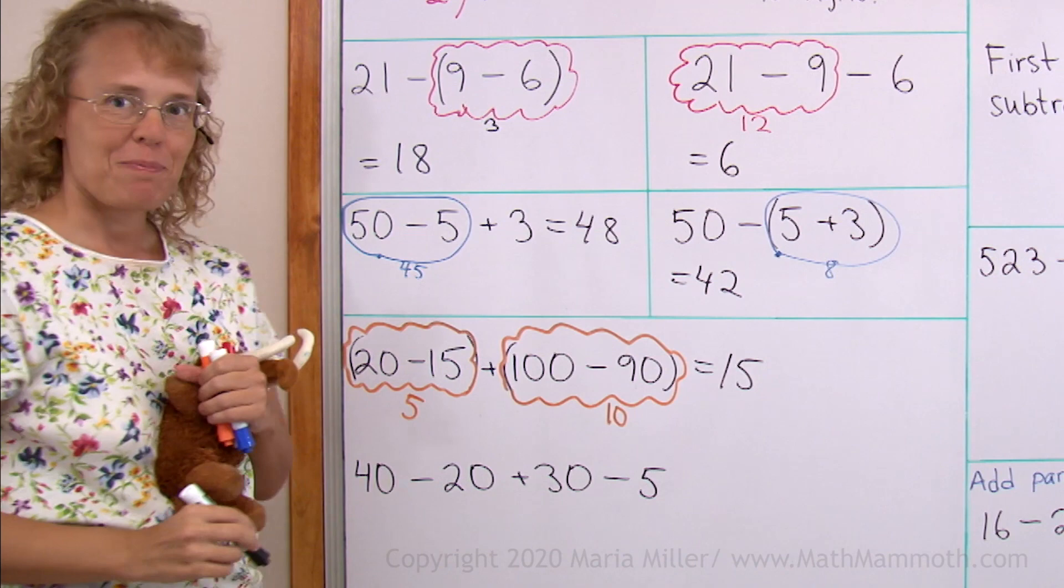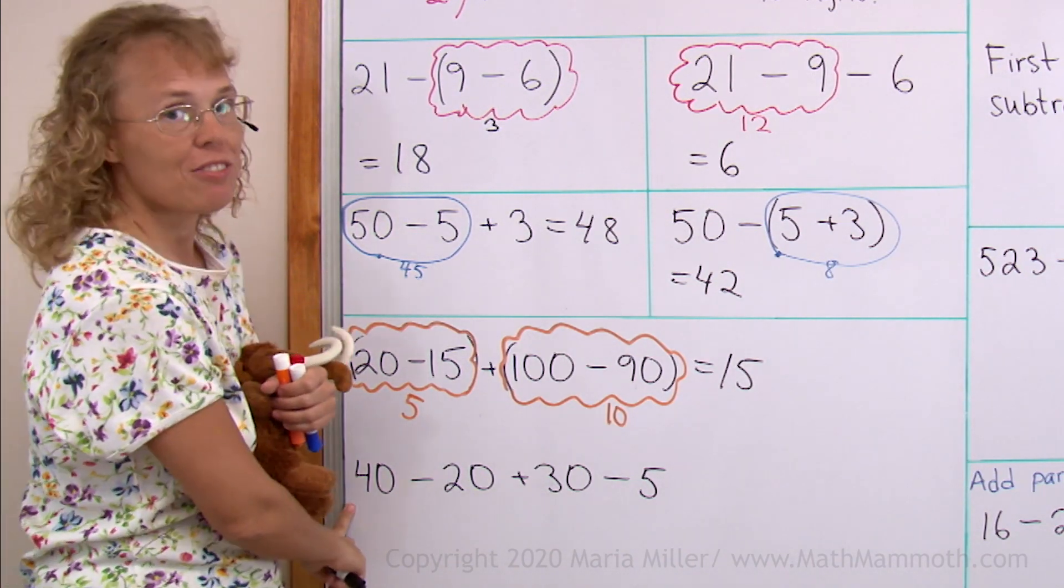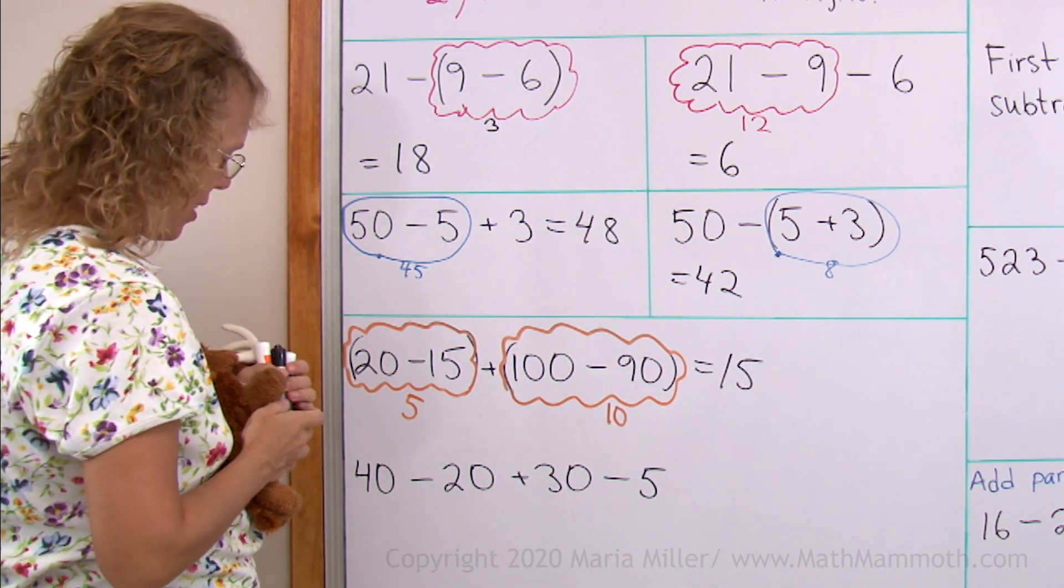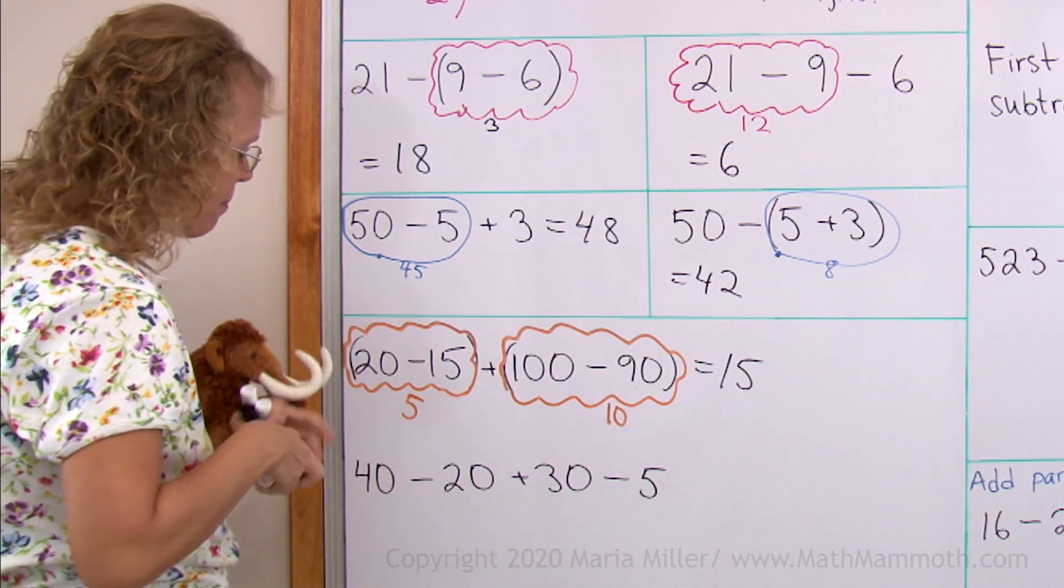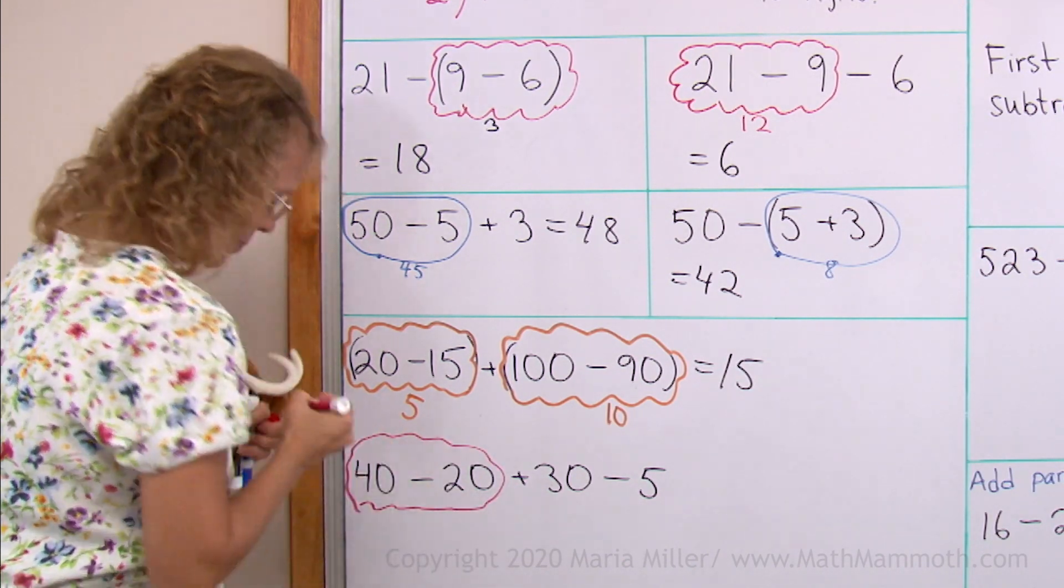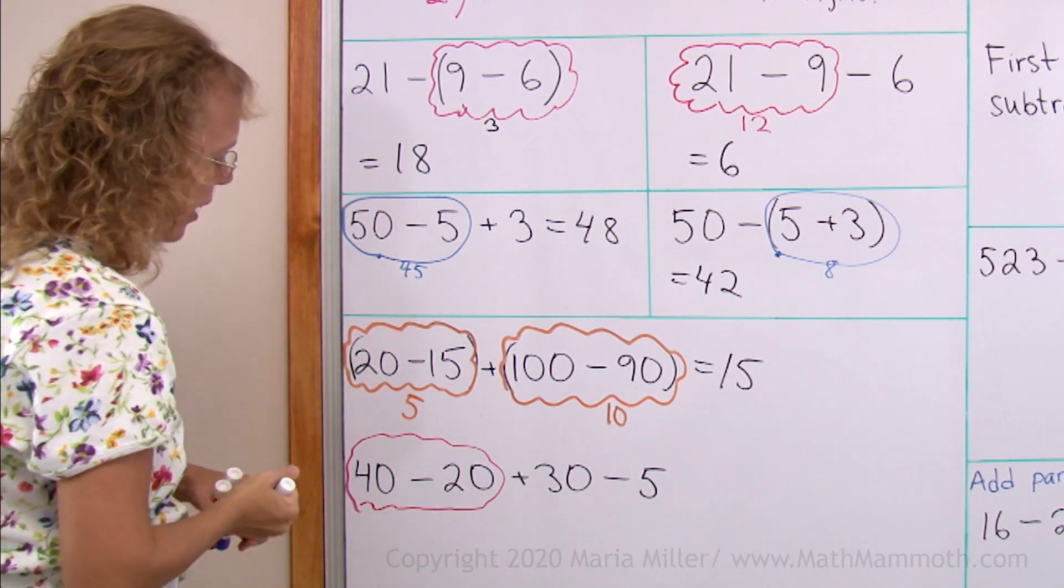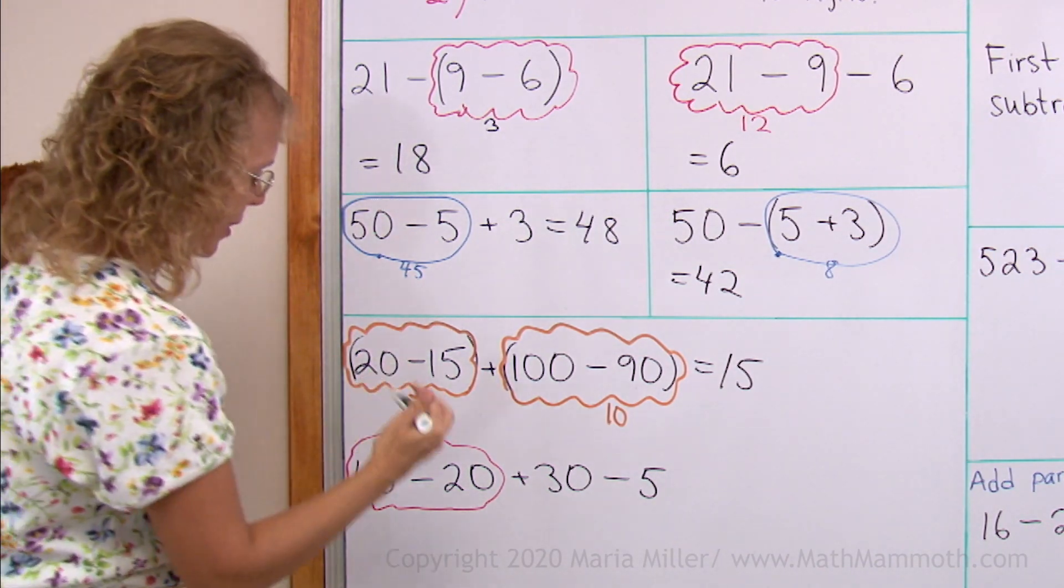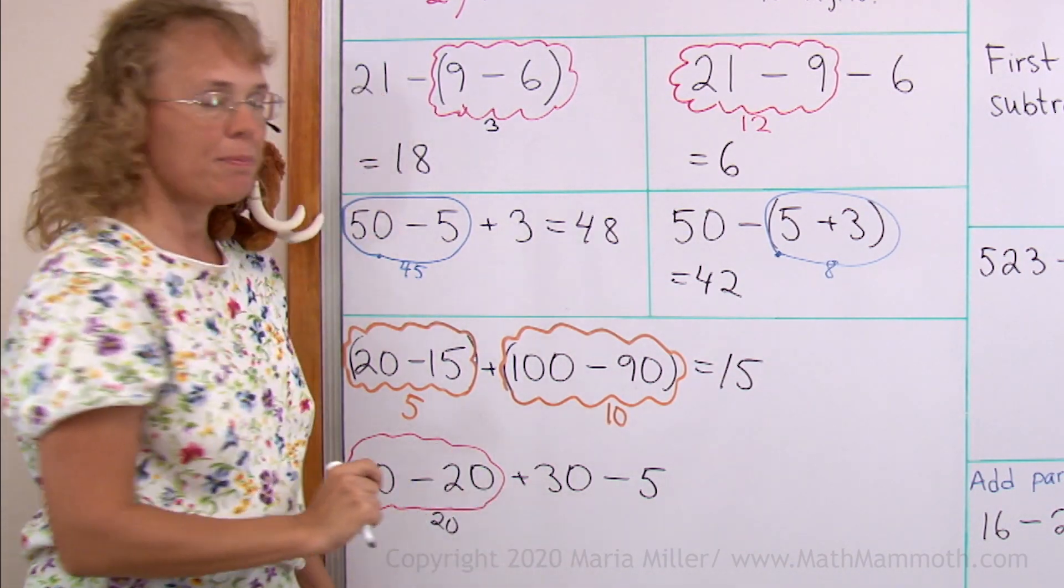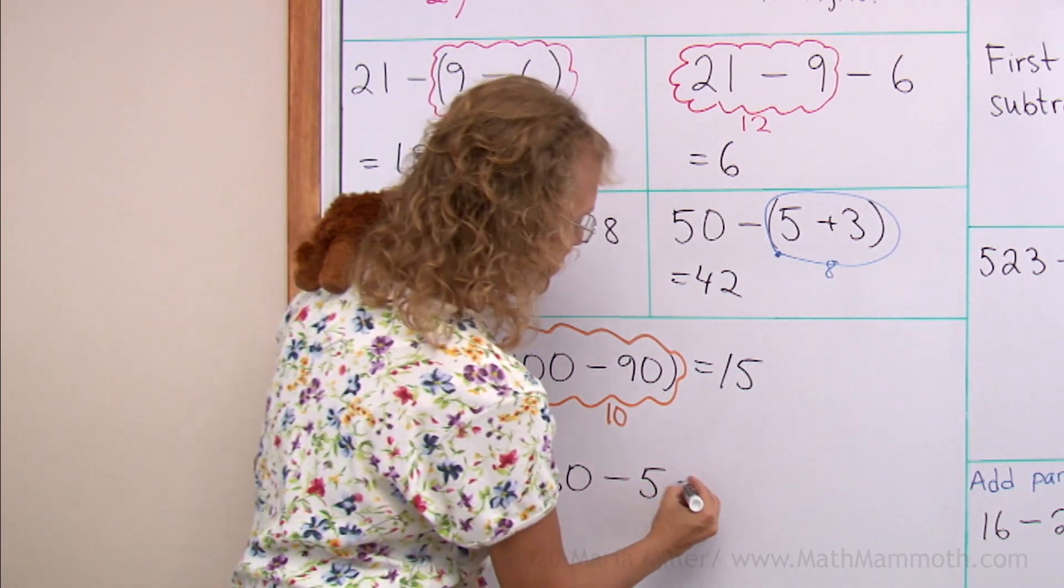How about that one? No parentheses. So you will start from left to right. Go in order. Shall we use red again? And then this first. Matthew, go back. 40 minus 20 is 20. Then we go in order. 20 plus 30, 50. And then 50 minus 5, 45.